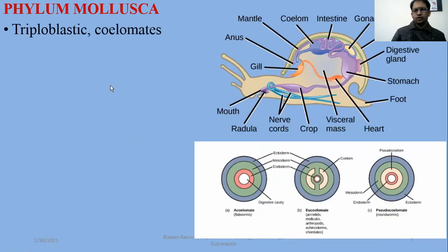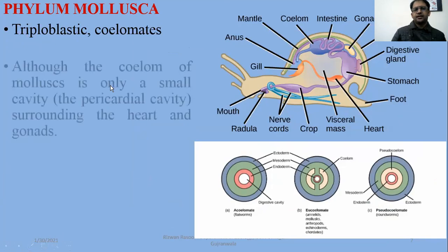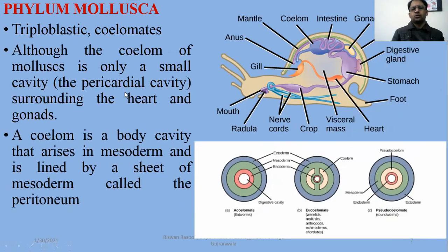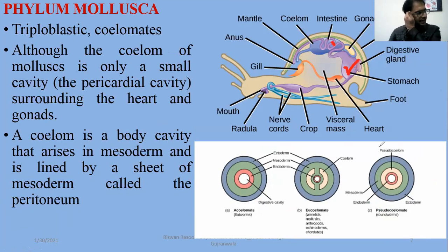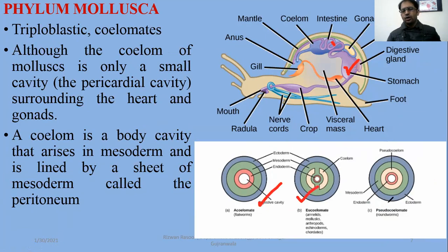Looking at some general features: molluscs are triploblastic coelomates. The coelom of molluscs is only a small cavity, reduced to the pericardial cavity which surrounds the heart and gonads — this is called the coelom cavity. A coelom is a body cavity that arises in the mesoderm and is lined by a sheet of mesodermal cells called the peritoneum. We have talked about acoelomates, pseudocoelomates, and true coelomates.